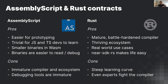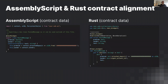AssemblyScript cons: the compiler, ecosystem, and debugging tools are a little immature. Rust cons: a very steep learning curve — it might take weeks or months to write a Rust contract from a blank page. Even experts sometimes struggle with the compiler over ownership or borrowing rules. If you don't know Rust yet, I'd recommend focusing on AssemblyScript this week — the concepts are the same and you're not giving anything up in terms of learning NEAR.